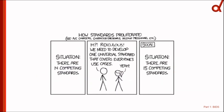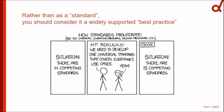How do standards proliferate? You might know the situation: we have 14 competing standards — that's ridiculous, so we need to develop one universal standard that covers everyone's use cases. And then you end up with 15 competing standards. We're very much aware of this. BIDS is not a standard. You should think of BIDS as a widely supported and widely adopted guideline for best practices. It's a specification of a data structure — we're not enforcing anything on you, but trying to help the wider community adopt best practices.